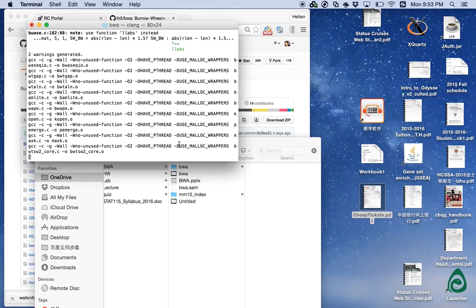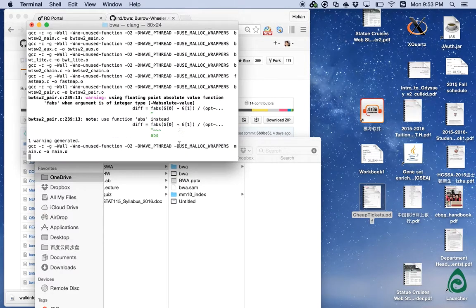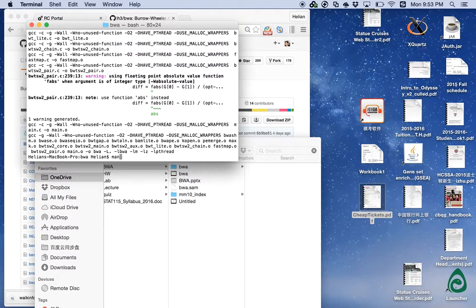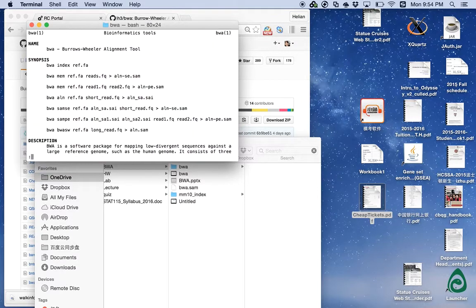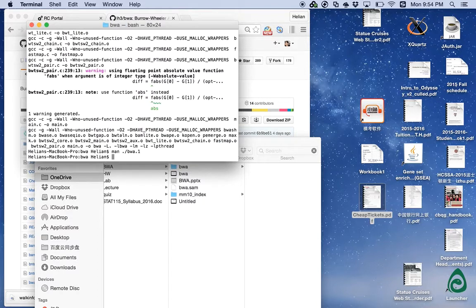You are able to check whether it is installed properly by typing man bwa.1. If you get to this menu page then you should be all set. Type q to exit it.